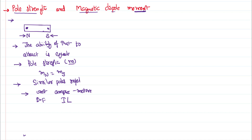The pole strength is a scalar quantity. It does not add any direction — it has only magnitude, and the direction of the pole strength has no significance. Between the north and south pole there is a certain distance, which is called the length of the magnet.